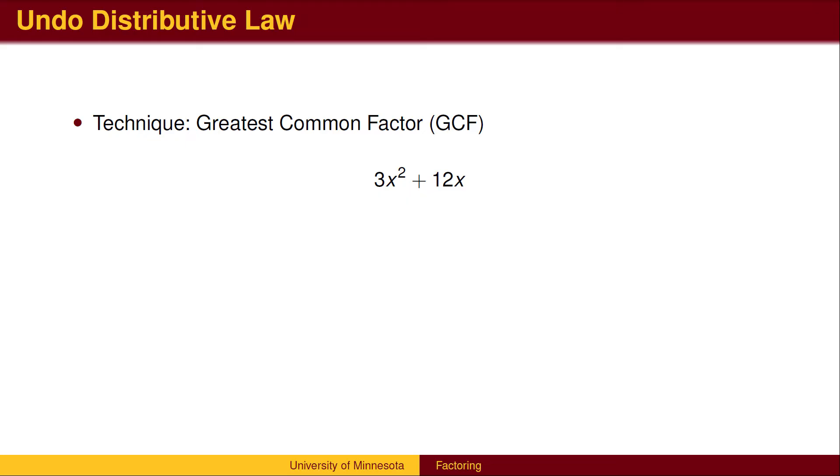You may have noticed that both terms have a factor of 3, since 12 is 3 times 4. Is there anything else? Yes. Both terms have the variable x. The 3x squared term has two factors of x. Recall that x squared is x times x. The 12x term has one factor of x.